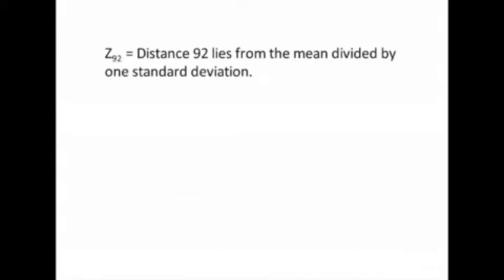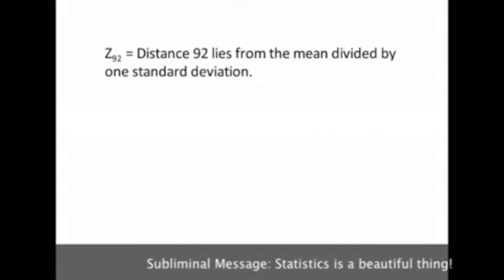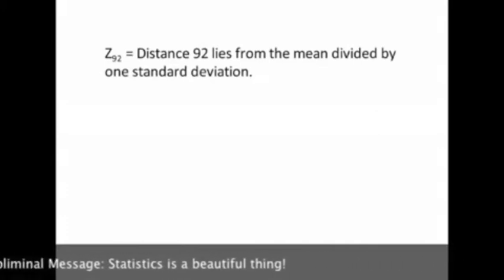What we're looking for is a z-score for 92. That means how many standard deviations above or below the mean does 92 lie. To calculate this z-score, we're going to need to take the distance that 92 is from the mean and divide it by one standard deviation to show that it tells us how many standard deviations above or below the mean that this data point lies.